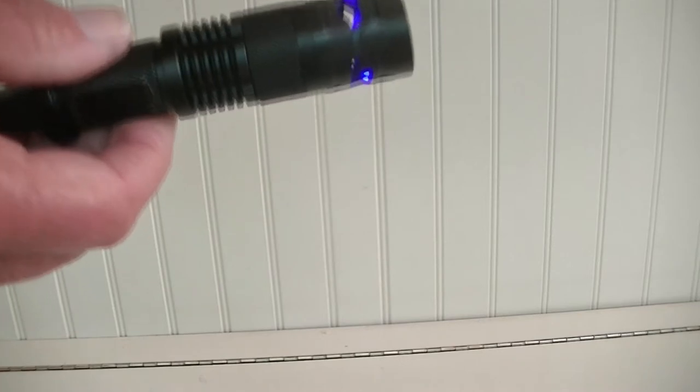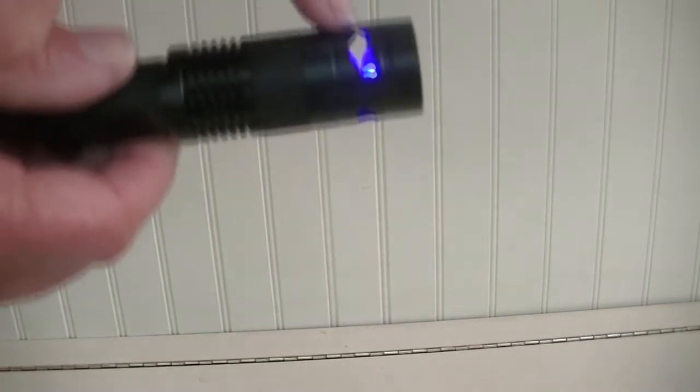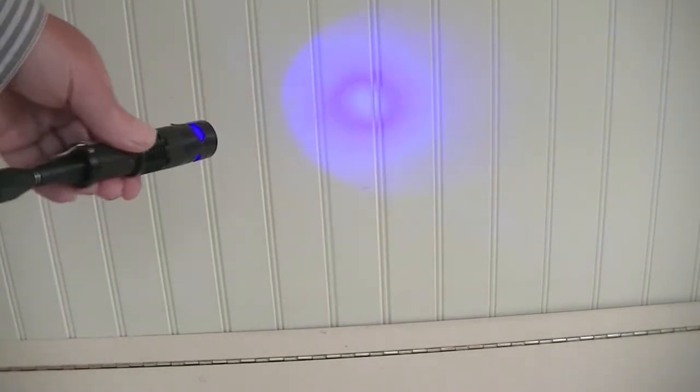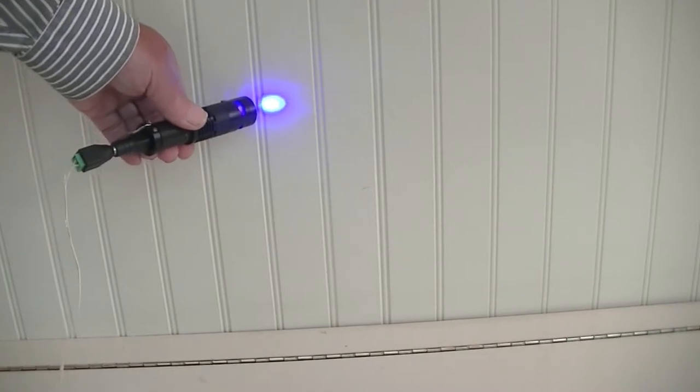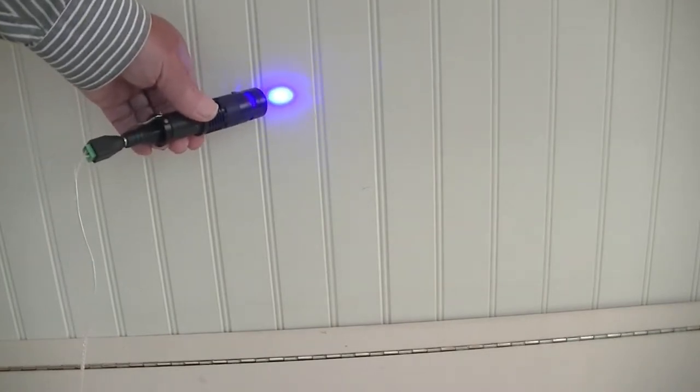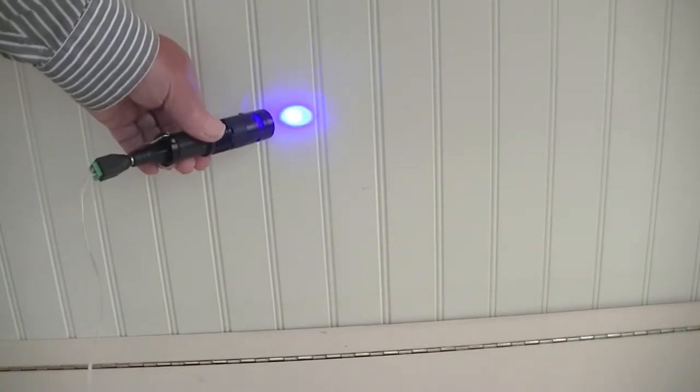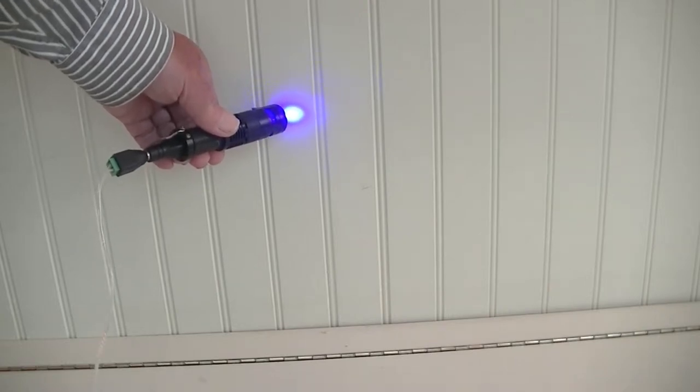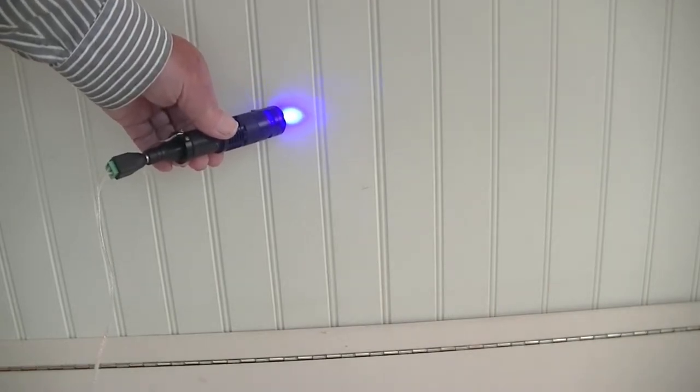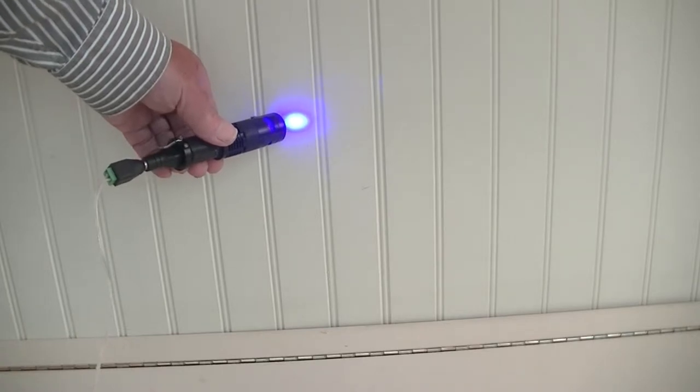Now I've attached the two lenses together and when we put this against the wall we can see it focuses down to a spot of a few millimeters. That's nice and bright and about the right size to illuminate the sample under a dissecting microscope.